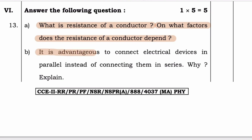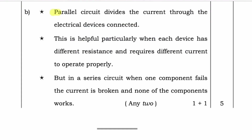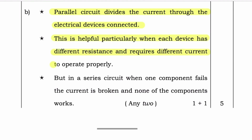It is advantageous to connect electrical devices in parallel instead of connecting them in series. Why? Explain. Answer: Parallel circuits divide the current through the electrical devices connected. This is helpful particularly when each device has different resistance and requires different current to operate properly. But in a series circuit, when one component fails, the current is broken and none of the other components works.